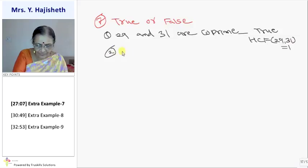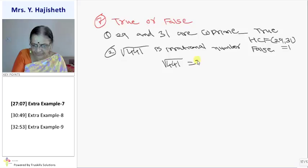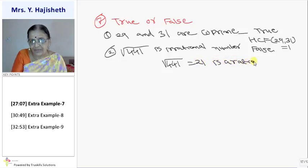Second sum, root 441 is an irrational number. It is false. Why it is false? Because root 441 is a perfect square of 21. And 21 is a rational number. So given statement is false.